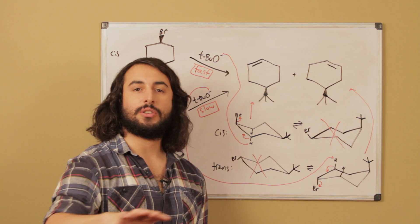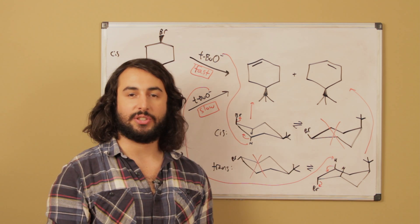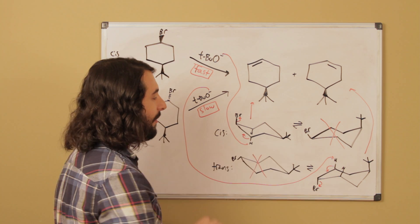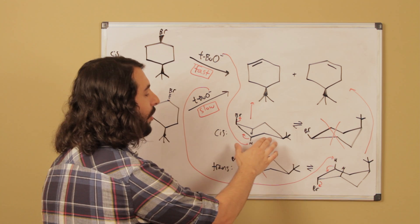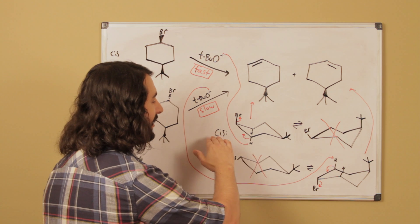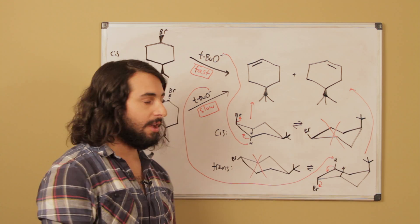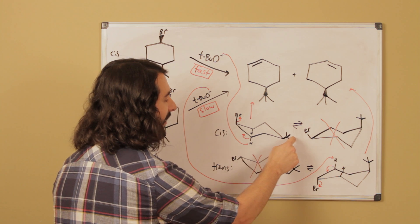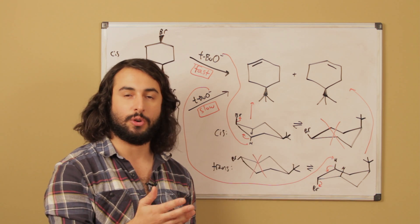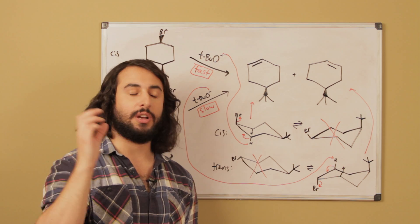Now, but the thing is, in solution the distribution of conformations reflects the thermodynamic favorability. And so almost all of the time this cis isomer is going to look like that conformation because of the thermodynamic favorability of putting the tert-butyl in the equatorial group.